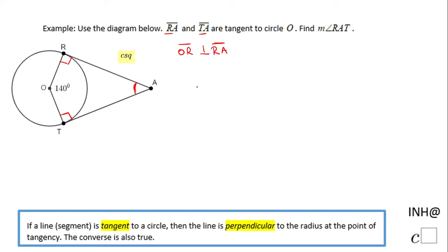Also, O T which is the other radius is perpendicular on T A, which means angle R and angle T are right angles. So the measure of angle R is 90 degrees and the measure of angle T is also 90 degrees.